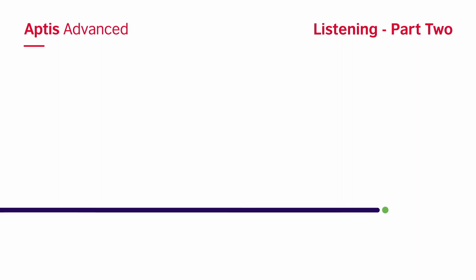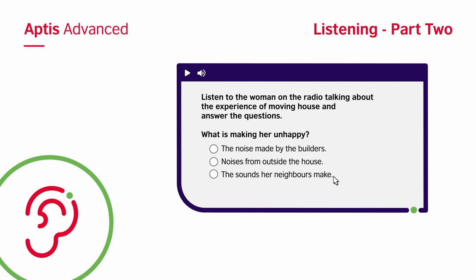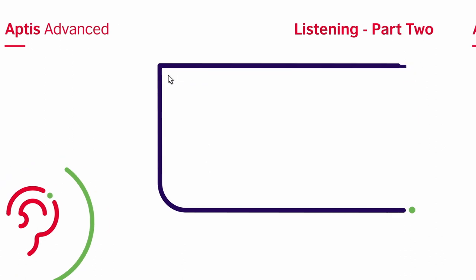In the next part, you will listen to three separate monologues and answer two questions for each recording. Use the fact that you can listen twice to your advantage here. Read through the questions before you listen. Then, on your first listen, select your answers and listen a second time to confirm. Remember that in part one and two, if you'd like to hear a question for the second time, just click on the play button. The system will not allow you to listen more than twice.